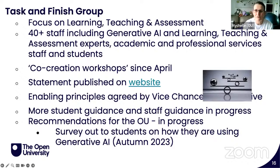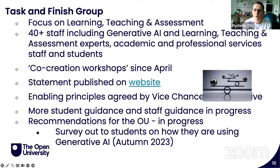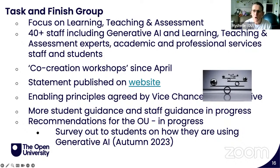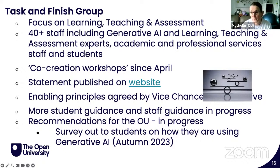So what has the university done so far? We set up a task and finish group to focus specifically on learning, teaching, and assessment. More than 40 staff who are experts in generative AI or in learning, teaching, and assessment came together, along with people from the student support team. We've been running co-creation workshops with group authorship and ownership. We've published a statement on the website — I'll put the link in the chat. We have a set of enabling principles which are bold, open, and inclusive, because we absolutely want to move forward with generative AI as an institution. We're planning more detailed staff and student guidance, and in the autumn we're putting a survey out to students asking how you are using it.